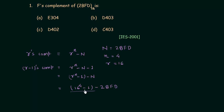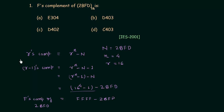When you solve this, 16 raised to power 4 minus 1 gives you ffff minus 2bfd. So this is what we have to do to find the F's complement of the number 2bfd. Let's move to it — we will perform the subtraction: ffff minus 2bfd.